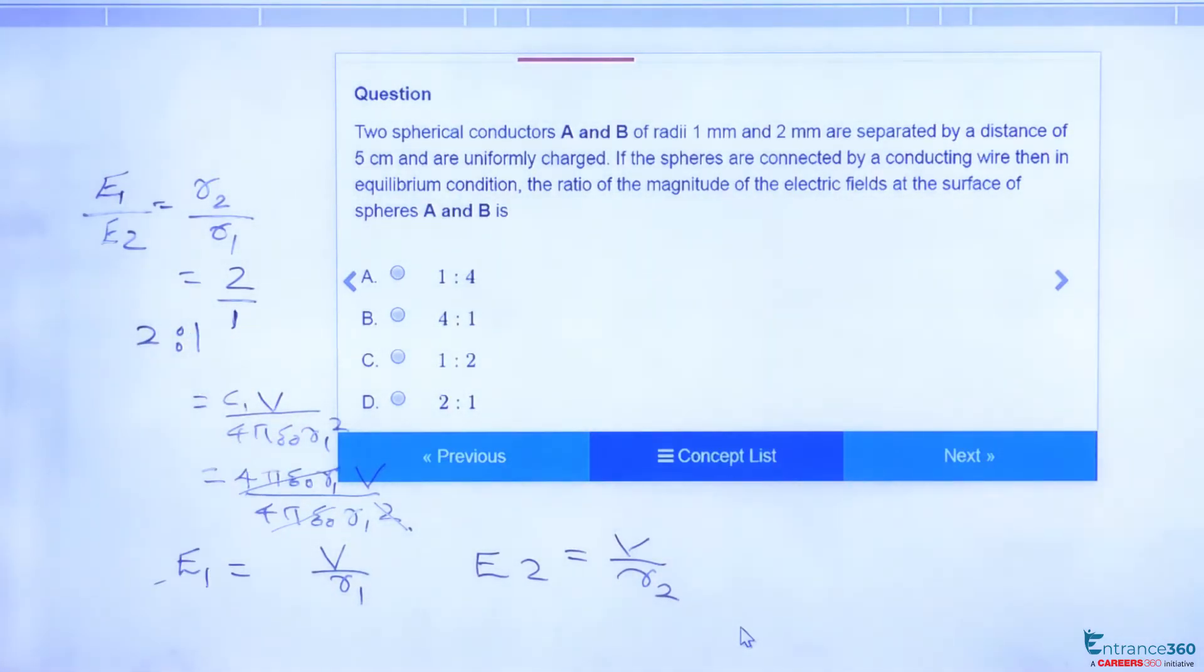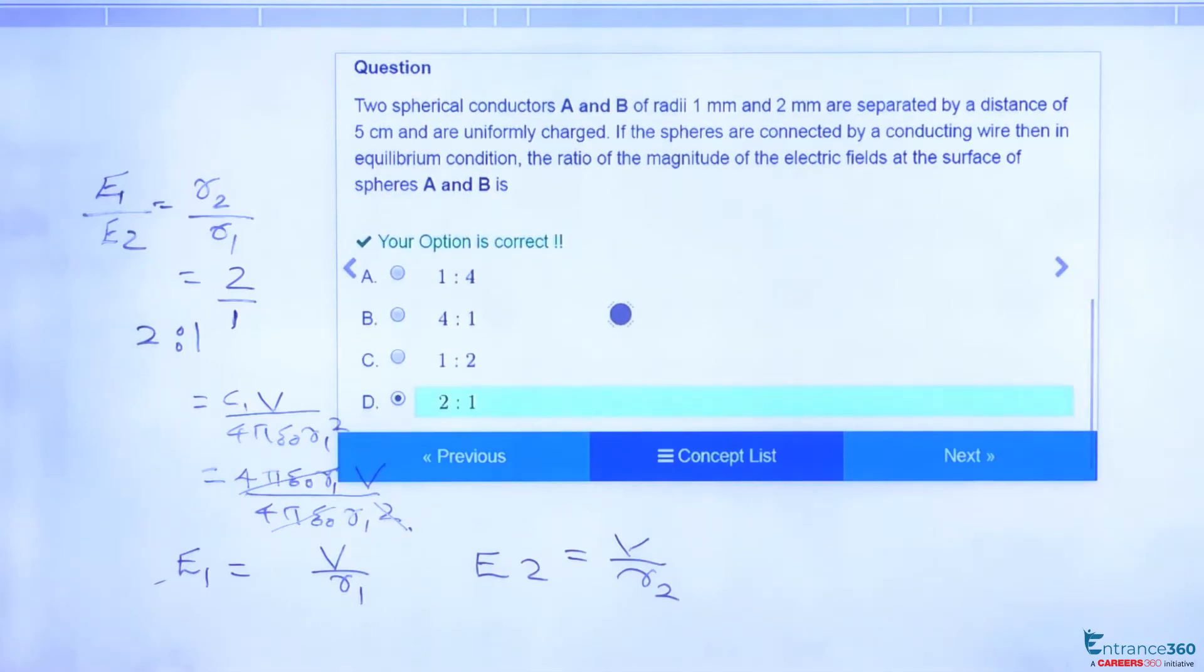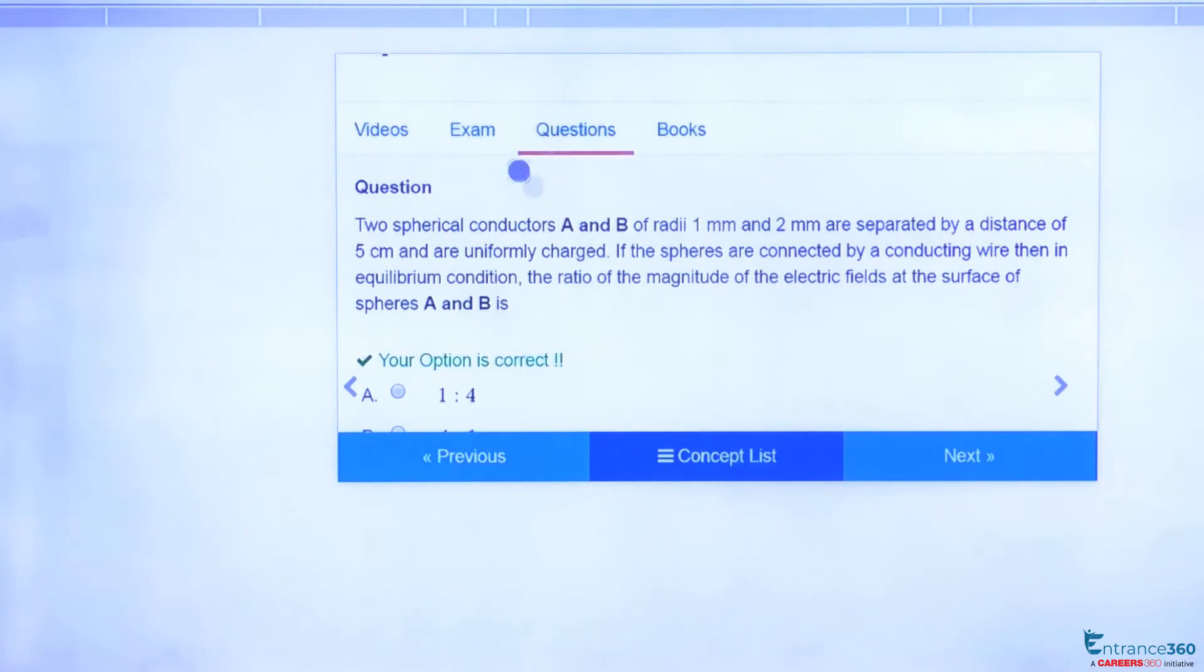2 to 1. 2 to 1 is our option D, so right answer is D. To know more about this concept,